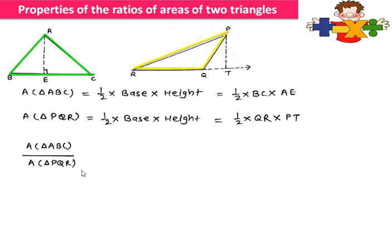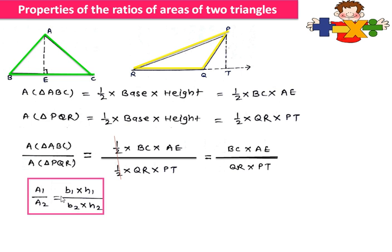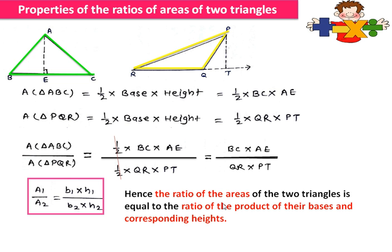Area of triangle PQR is 1/2 into QR into PT. Now we take the ratio: area of triangle ABC upon area of triangle PQR equals (1/2 × BC × AE) / (1/2 × QR × PT). The 1/2 cancels, giving us BC × AE upon QR × PT, which is B1 × H1 upon B2 × H2. Hence the ratio of the areas of two triangles equals the ratio of the product of their bases and corresponding heights.